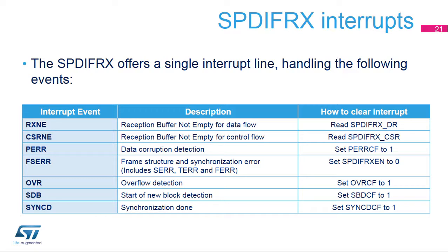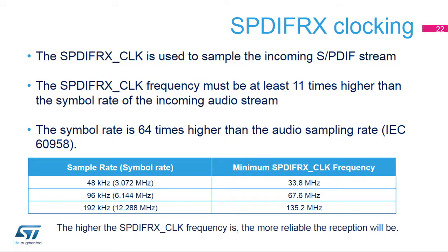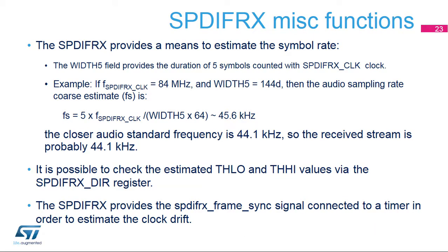The SPDIF-RX offers a single interrupt line shared by several events: error events, data and control flow reception events, synchronization ready event, and block detection event. In order to have reliable decoding of the SPDIF stream, the SPDIF-CLK frequency must be at least 11 times higher than the symbol rate. The table gives the minimum requested frequency for SPDIF-CLK according to the sample rate of the SPDIF stream. The SPDIF-RX provides information allowing the application to estimate the sampling rate of the decoded stream without having to decode the CS channel, though accuracy is partly limited by the SPDIF-CLK frequency.